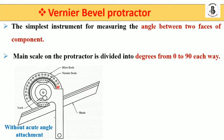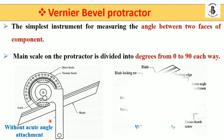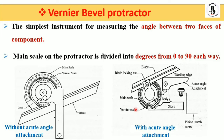You can see the main scale has markings from 0, 10, 20 up to 90, and from the other side also 0, 10 up to 90. This is also the vernier scale indicated here, and this is my lock key. As per the size and shape of the components, different sizes of blades can be used. This is the basic construction of the bevel protractor without the acute angle attachment.